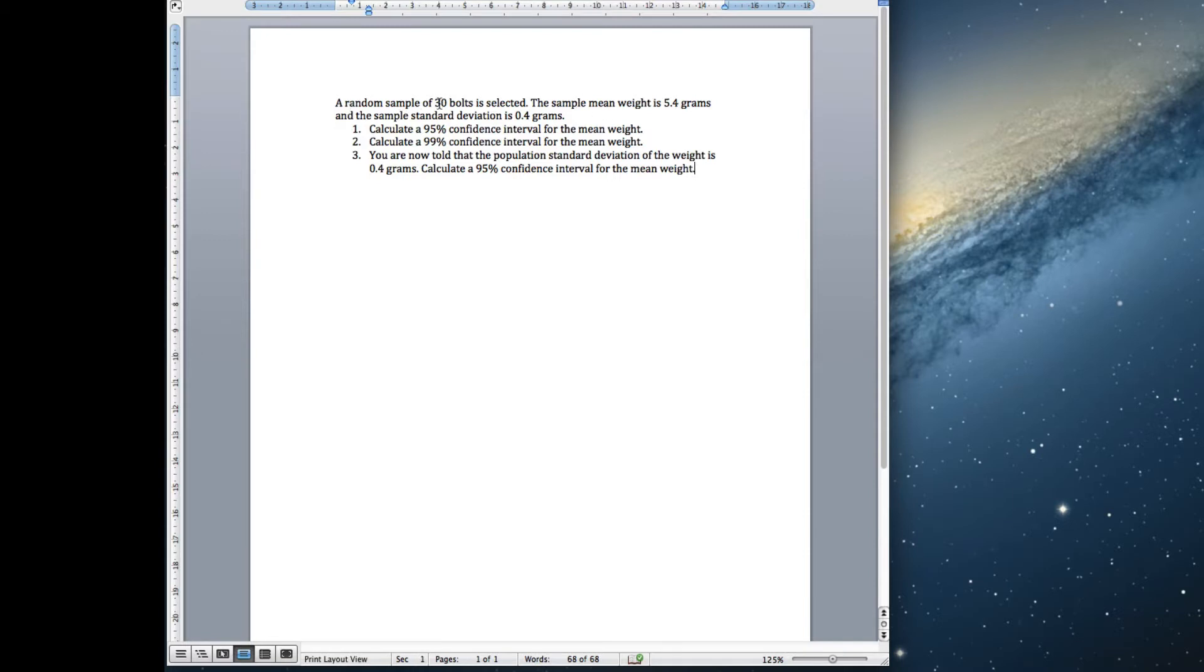So we've got a random sample of 30 bolts, the sample mean weight is 5.4 grams, and the sample standard deviation is 0.4 grams. We're going to calculate a 95% confidence interval, a 99% confidence interval, and then we're going to have a look at a slightly different question.